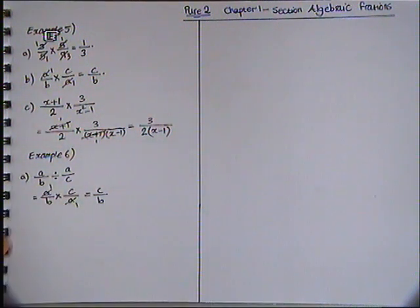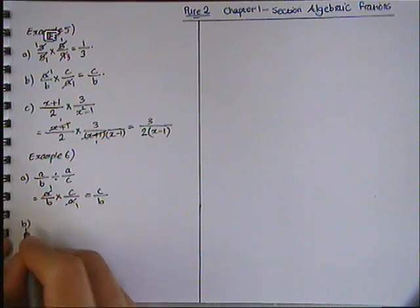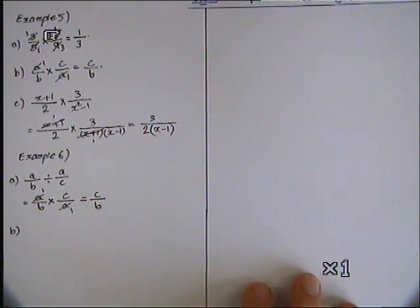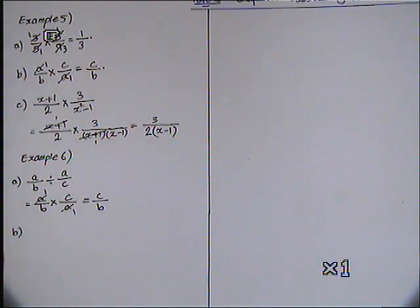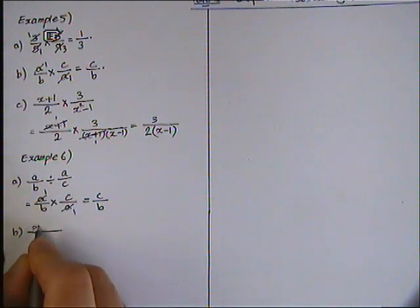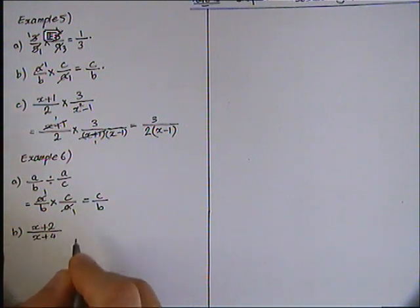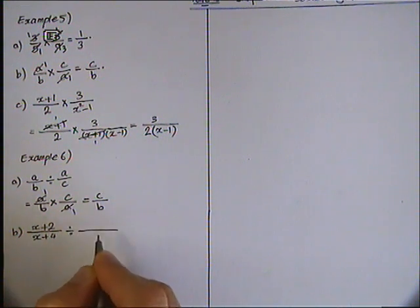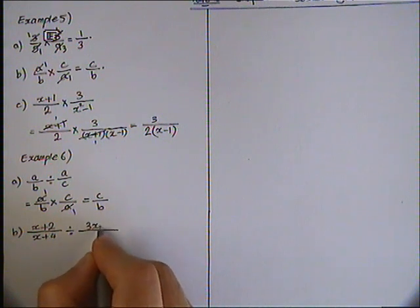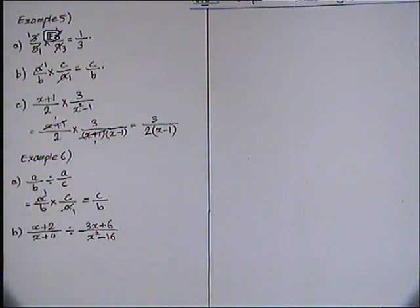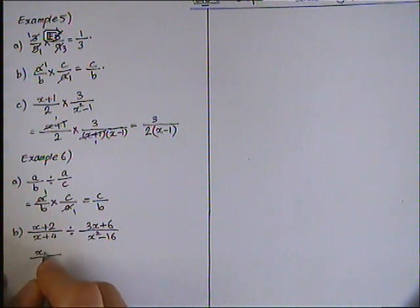So this one was Example 6a. Let's move on to 6b. X plus 2 over x plus 4 divided by 3x and 6 over x squared minus 16. If we look at the first fraction, x plus 2 over x plus 4, we cannot simplify this fraction at all. So what we need to do - write down the first fraction as it is, change the division sign to multiplication.